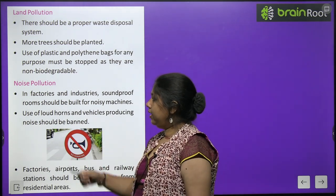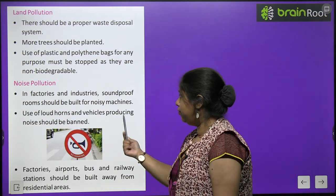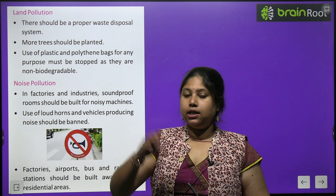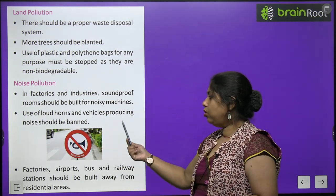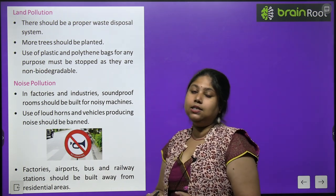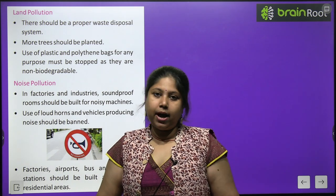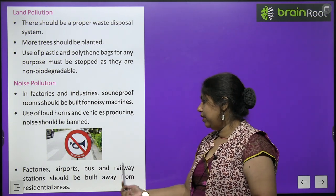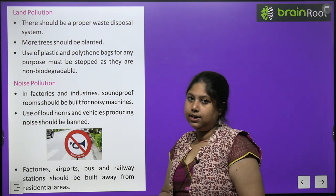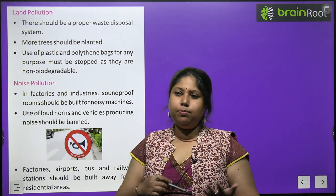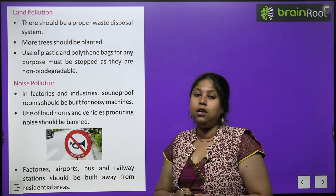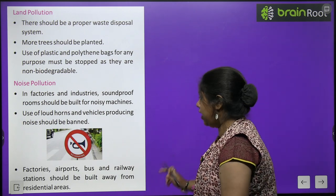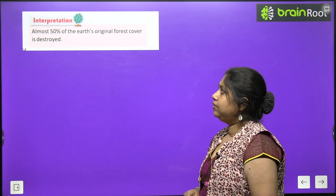To reduce noise pollution, soundproof rooms should be built in factories and industries for noisy machines so the noise doesn't disturb others outside. Use of loud horns and vehicles producing excessive noise should be banned, and the decibel level of horns should be reduced. Factories, airports, bus and railway stations should be built away from residential areas to minimize noise disturbance to people living nearby.